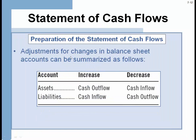Assets increase means cash outflow — that's a use of cash, because the company is tying more money up in inventory or accounts receivable. Assets decrease — for example, a decrease in accounts receivable — is going to be a source or inflow of cash. Likewise, an increase in a liability is an inflow — think of it like taking out a loan. And a cash outflow would be when you're paying off a loan, because you're reducing the liability with cash.